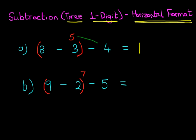And now we're going to do the second part, which is seven minus five. So what is seven minus five? Seven minus five is two. So nine minus two minus five equals two. So subtracting three one-digit numbers in the horizontal format is very simple.